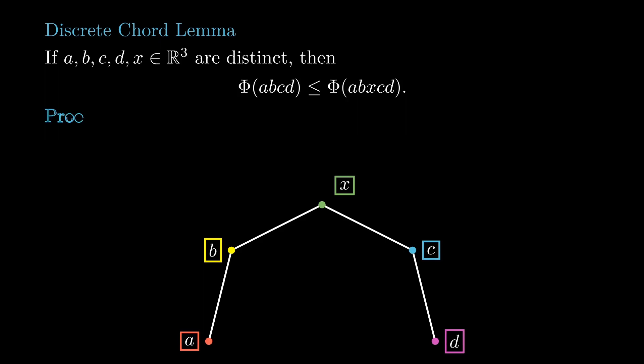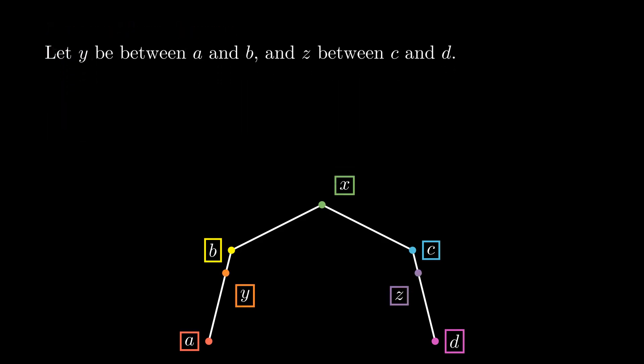To prove this other lemma, we consider a point y between a and b and the point z between c and d. When we replace a by y and d by z in the piecewise linear curve abxcd, we don't change the total curvature as the new curve has the same directions in the same order. Applying the corollary lemma to the curve ybxcd, we obtain that it is at least the sum of the angles zdyb and yzdc.